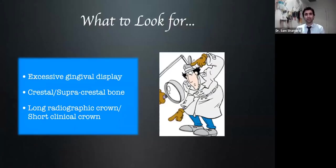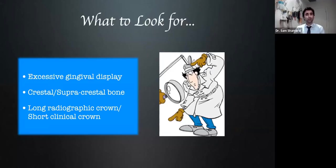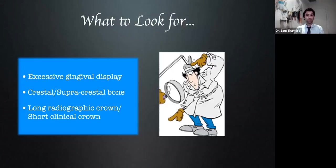When we look at these aesthetic cases, some basic factors we're looking for: the most common is excessive gingival display — the so-called gummy smile, where patients show an excess amount of gingiva as their chief complaint. We also have to match that with what radiographs show us. We're looking for things like crestal or even supracrestal bone levels, which correspond to excessive gingival display and help us diagnose cases properly — understanding when aesthetic treatment is indicated versus when it is not.